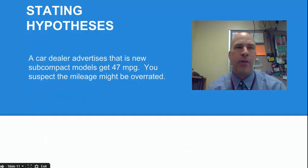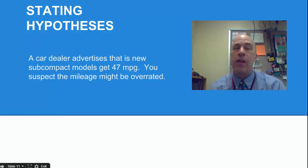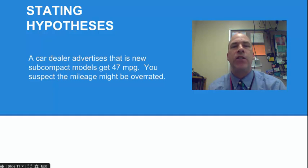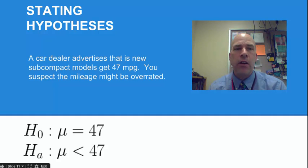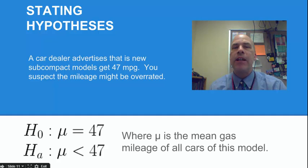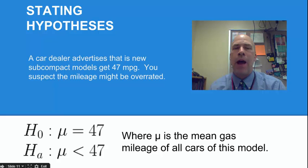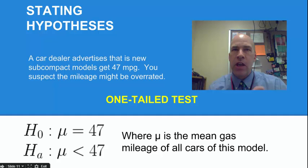Here's another example. A car dealer advertises that its new subcompact models get 47 miles per gallon. You suspect that the mileage might be overrated, that it's probably something less than 47. So again we have a null and an alternate hypothesis: the null is that the mean is 47, versus the alternative that the mean is less than 47. Mu is the mean gas mileage for all cars of this model. And again, this would be a one-tailed test because we're only looking in the less-than direction.